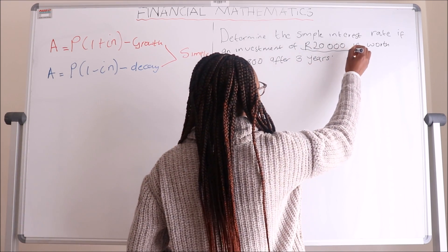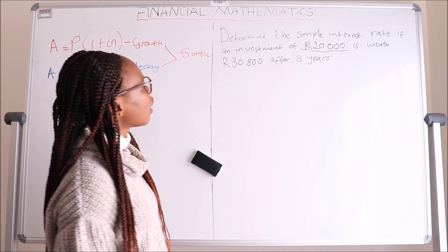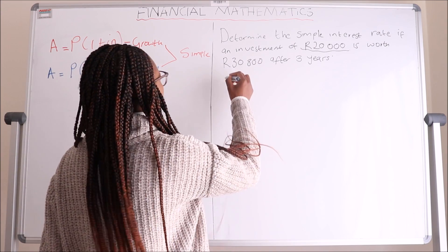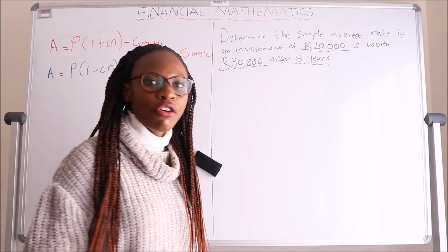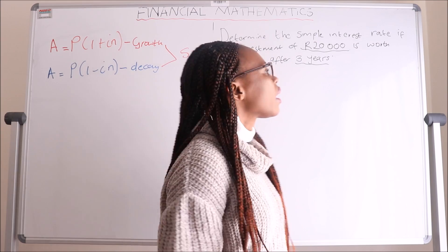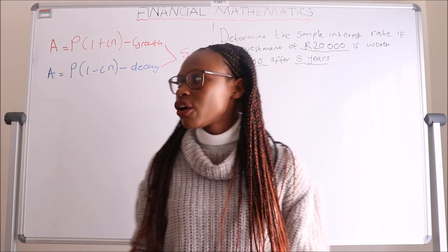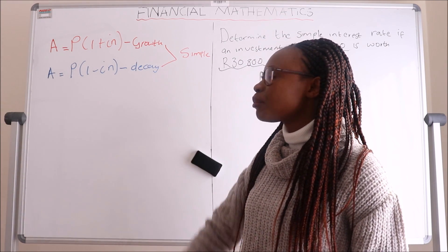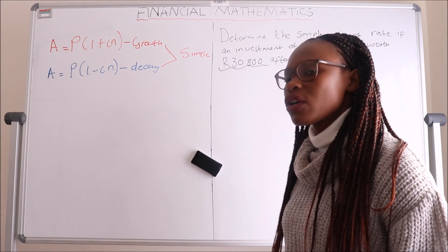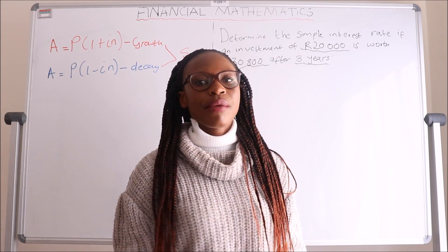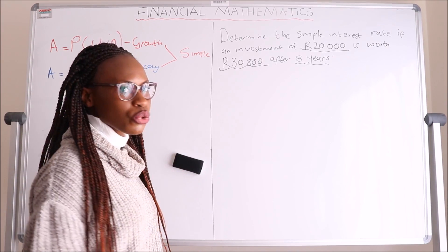This twenty thousand is our principal value P, thirty thousand eight hundred is our A which is the final amount, and three years is the number of years the investment took. From twenty thousand to thirty thousand eight hundred we know that's an increase — that's a growth. So from these two equations we choose the simple growth equation because the investment has increased during this three-year period. The question asks us to find the simple interest rate, which is I.